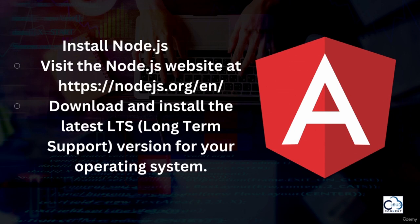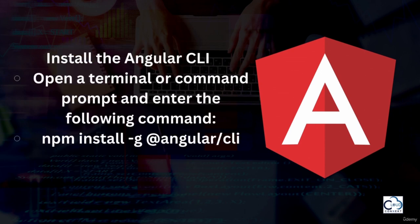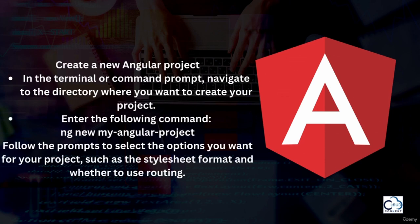Next, install the Angular CLI (Command Line Interface) by opening a terminal or command prompt and entering: npm install -g @angular/cli. Then, to create our Angular project, navigate in the terminal to the directory where you want to create your project and enter: ng new my-angular-project, or any name you want. It will show prompts to select options such as stylesheet format and whether to use routing.